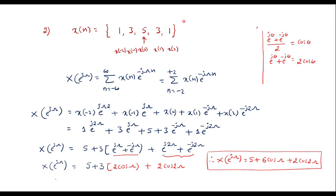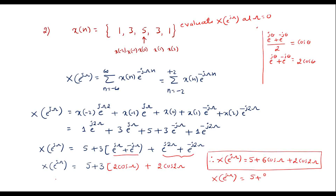Let me add one more question here: evaluate X(e^{jω}) at ω = 0. Substituting ω = 0 in the expression: X(e^{j0}) = 5 + 6·cos(0) + 2·cos(0) = 5 + 6·1 + 2·1 = 13.